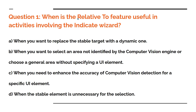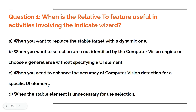So it is basically asking you when the relative to feature should be used. Here are the different options. Option A: when you want to replace the stable target with a dynamic one. Option B: when you want to select an area not identified by the computer vision — if the computer vision is not able to identify one of the UI elements, or choose a general area without specifying a UI element. Let's say you want to type something in a specific area of a notepad or a Word document. So is this the right answer? Option C: when you need to enhance the accuracy of the computer vision detection for a specific UI element. Should you use it for this reason?